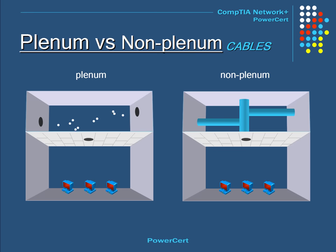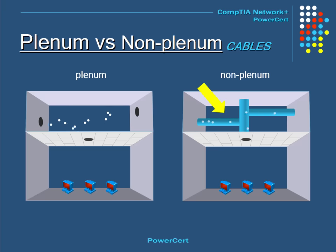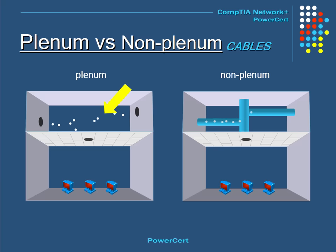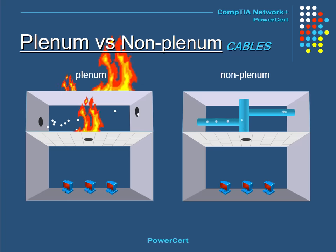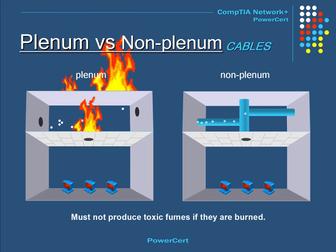The term plenum refers to a space in a building where there is open air flow circulation, usually between the drop ceiling and the structure ceiling. Buildings without plenum spaces have air ducts encapsulating the air flow. Buildings with plenum spaces are more prone to fires because of the open air flow. Because of this, cables that run through plenum spaces must be more fire resistant and must not produce any toxic fumes if burned.